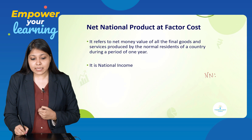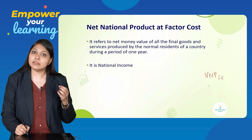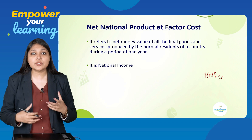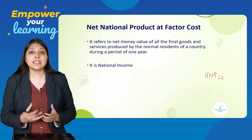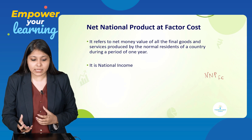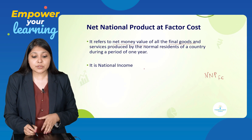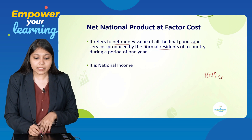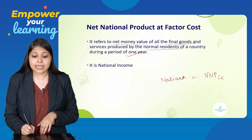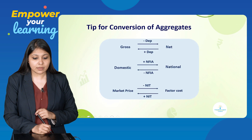The fourth national aggregate is NNP at FC — Net National Product at Factor Cost. Net means the value remaining after deduction of depreciation. National refers to goods and services produced by normal residents. FC means factor cost — written as money value — the cost at which goods are produced. It refers to the net money value of all final goods and services produced by normal residents during a period of one year. NNP at FC is also called national income.